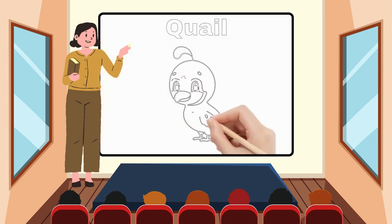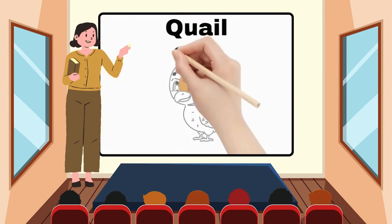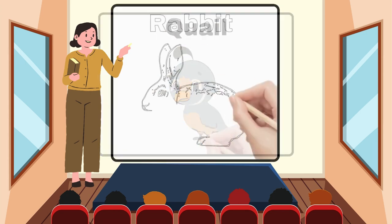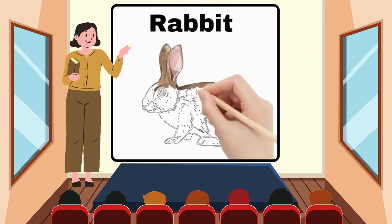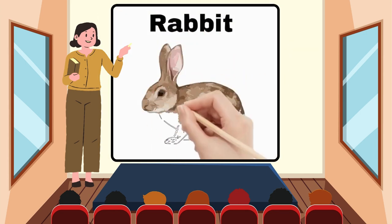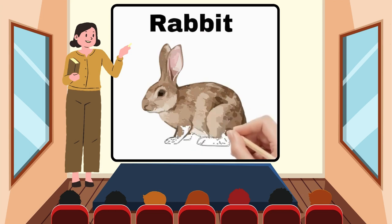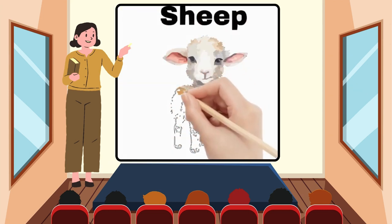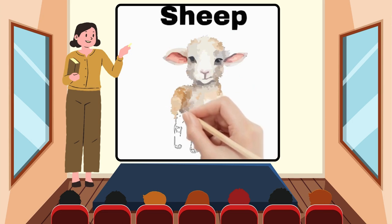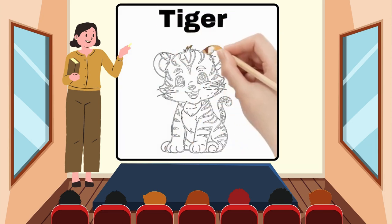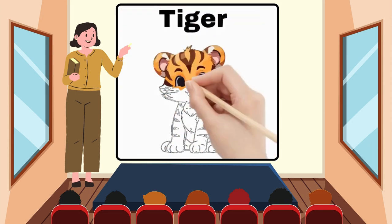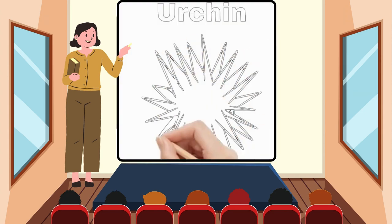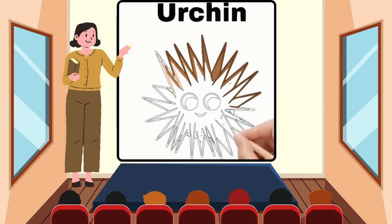Q for Quail. R for Rabbit. S for Sheep. T for Tiger. U for Urchin.